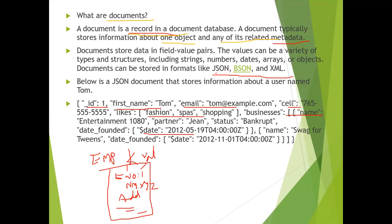JSON stands for JavaScript Object Notation, whereas BSON stands for Binary JavaScript Object Notation — essentially binary JSON. There are very few differences between JSON and BSON, which will be discussed in later sessions.